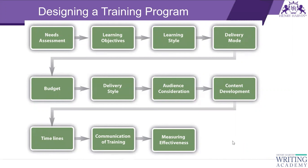Then identify the learning modes — whether it should be virtual or physical, what kind. Budgets, delivery style, then audience consideration — selecting the audience, what kind of audience they are, what my audience is into. Then content development comes into picture, and timeline, communication of training, then measuring the effectiveness. These are all the parameters we are considering in designing the training program.